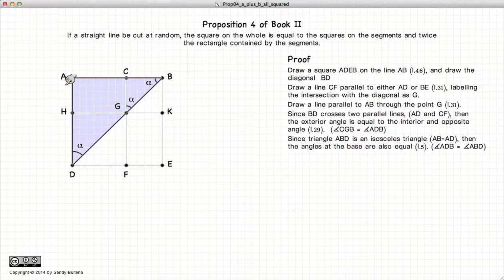Triangle ADB is isosceles since AB equals AD—we drew a square after all. Being isosceles, the base angles are equal according to Proposition 5.